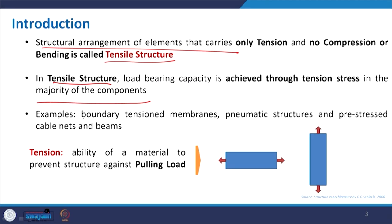Examples of tensile structures include boundary tension membranes, tensile fabric structures, and pneumatic structures — which we discussed earlier — that are also considered tensile structures. Then we have pre-stressed cable nets or beams. Cable net structures are normally used for making roofs for stadiums, where you use a membrane to make the structure light, supported with cable nets and cable beams.